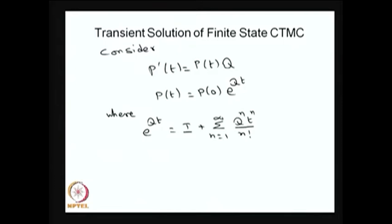I am not going into detail on how to compute e^(Qt), but whenever you have a CTMC with finite state space, this method also allows you to get the time-dependent solution. With this, I have completed the examples for the CTMC to find out the time-dependent or transient probabilities.